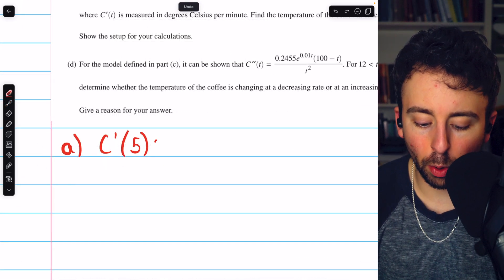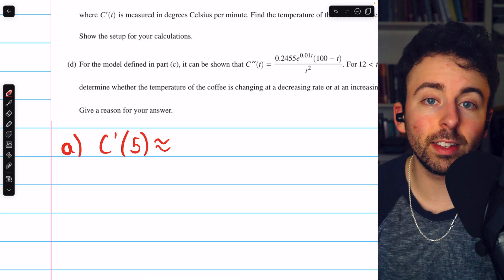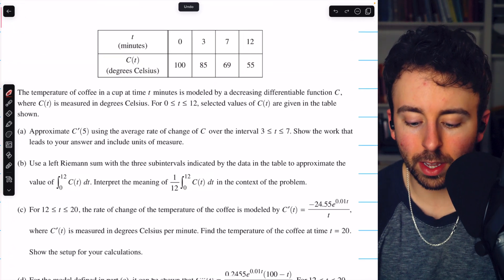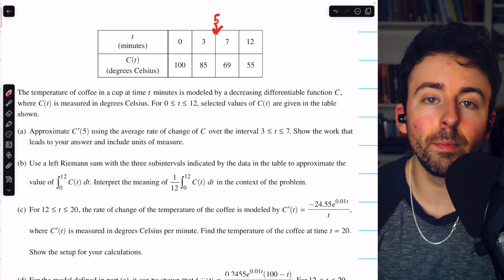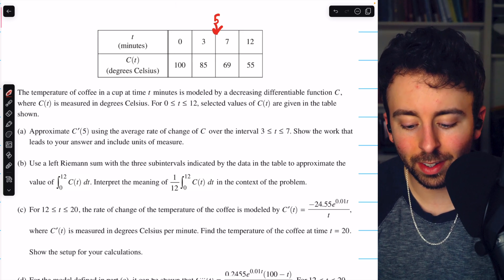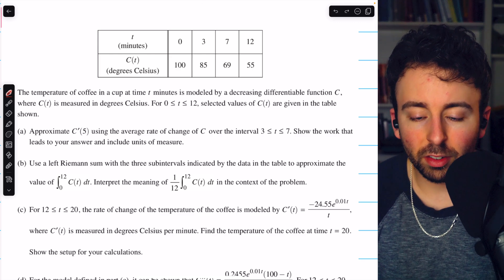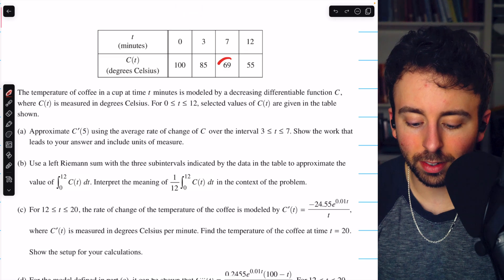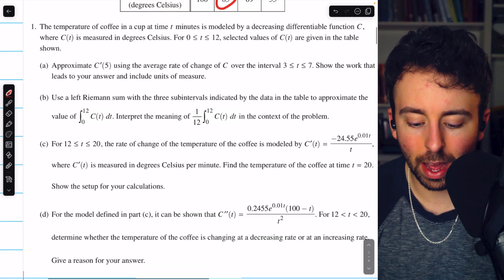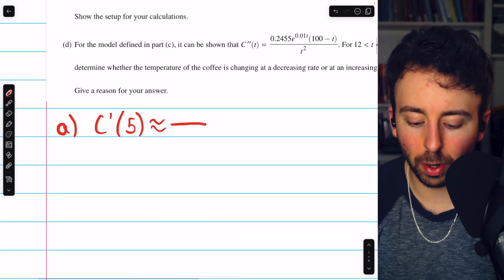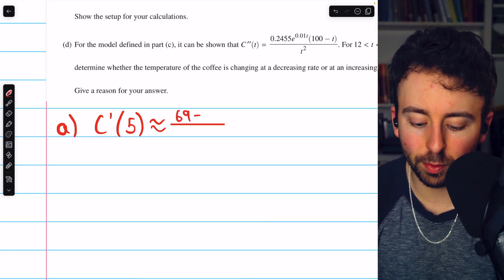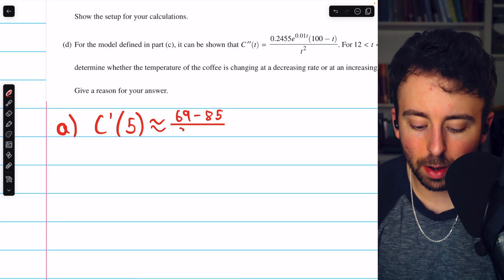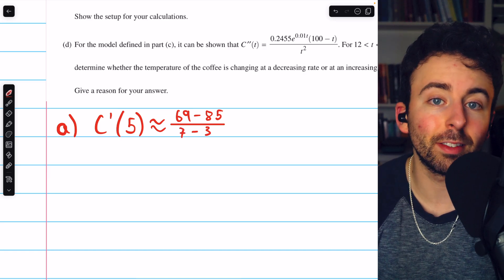So coming down here to write our work, we are approximating c prime of 5. We're using this interval from 3 to 7 because 5 is in the middle of that interval. So with the given information, this is the best we can do. So we'll calculate the average rate of change over this interval. So subtract the temperatures, 69 minus 85. That will be our numerator. 69 minus 85. That's the change in temperature. And then we just need to divide by the change in time, which is 7 minus 3.